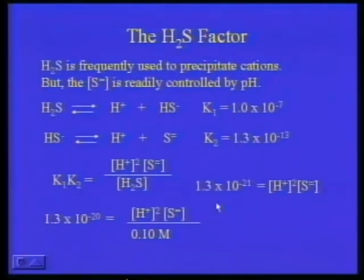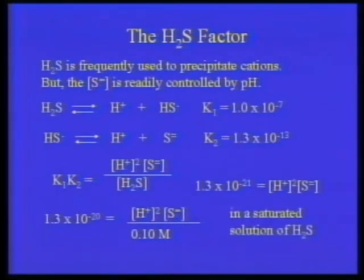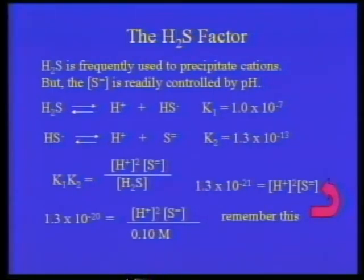If you have trouble learning these values, write them on paper and put them somewhere you'll see every day. For a saturated hydrogen sulfide solution, 1.3×10⁻²¹ = [H⁺]²[S²⁻]. This applies whenever you have a saturated H₂S situation. Don't ever forget it.